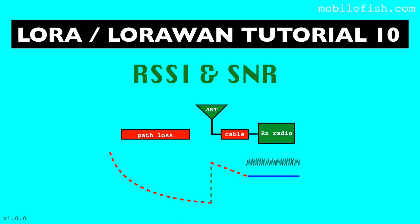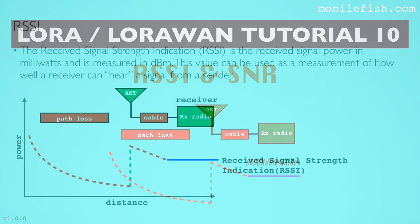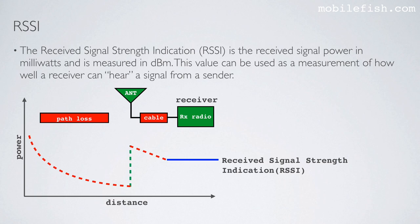In this tutorial I will explain what RSSI and SNR are. The receive signal strength indication, or RSSI, is the receive signal power in milliwatts and is measured in dBm. This value can be used as a measurement of how well a receiver can hear a signal from a sender.